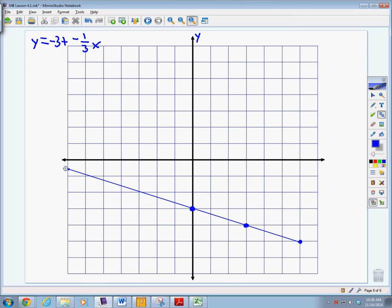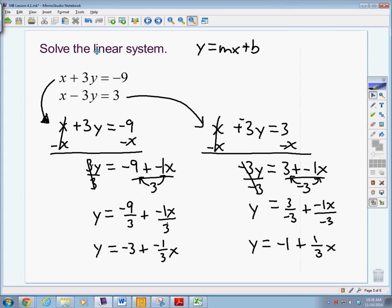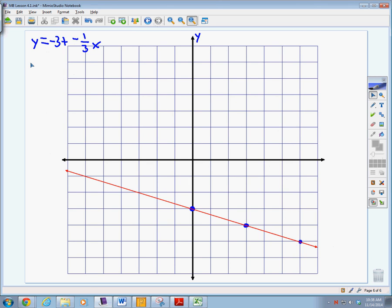Again, you want to make nice, long, straight lines. Our second equation is negative 1 plus 1 third x. y equals negative 1 plus a positive 1 third x.